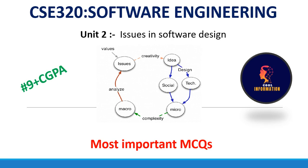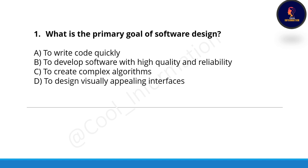Hello everyone, welcome to the next video of software engineering. In this particular video we will see MCQs of unit number 2, which is 'Issues in Software Design'. This is the 9+ CGPA MCQ series, and this series will go until your interim exam, so make sure to subscribe the channel in order to score a good CGPA.